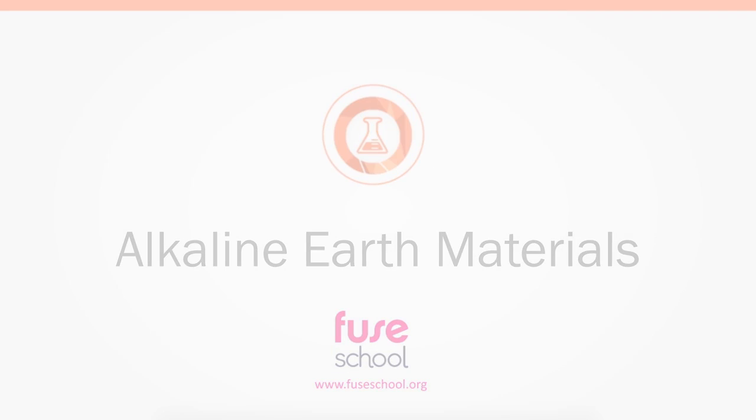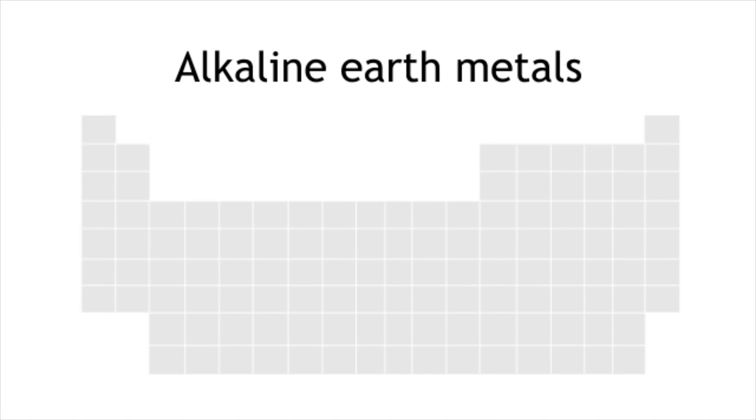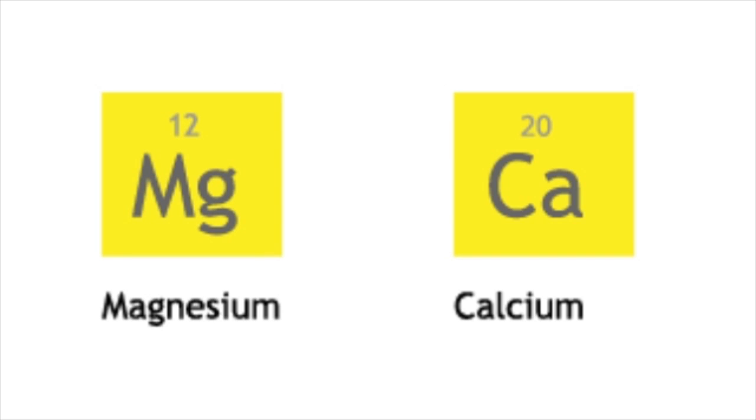In this lesson, we will learn about the alkaline earth metals in Group 2 of the periodic table. We will focus on magnesium and calcium, and learn about how they react with oxygen and water, and the products formed from these reactions.